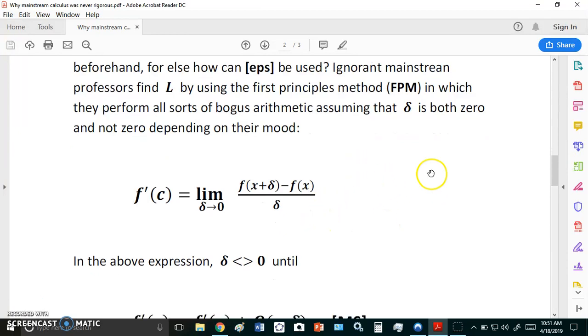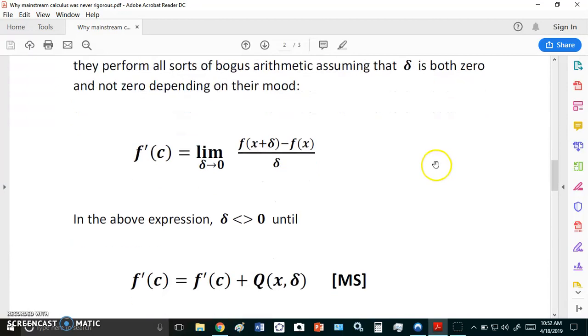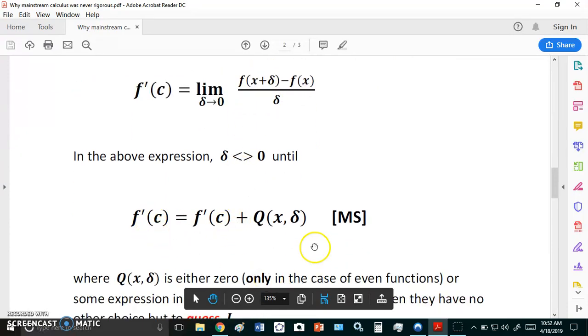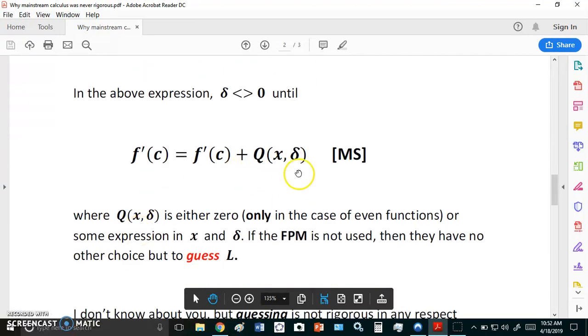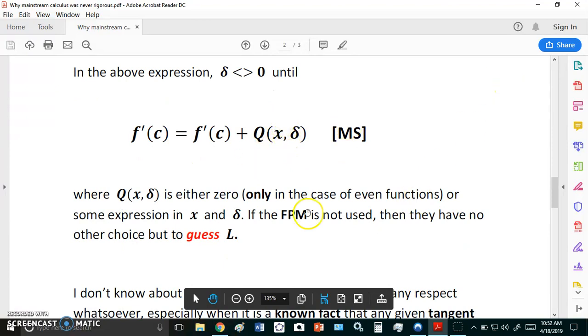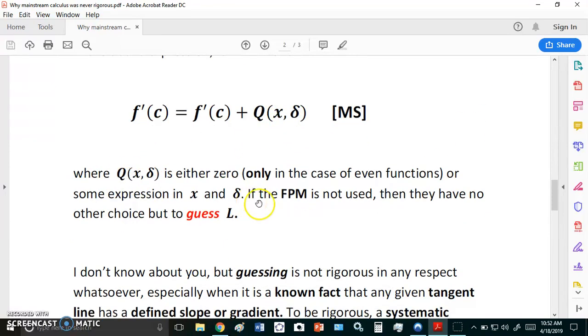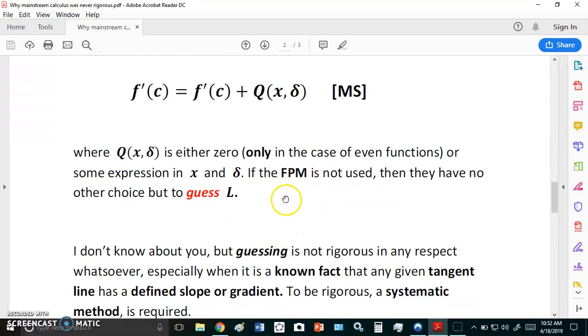In any event, the morons perform all sorts of bogus arithmetic assuming that delta is both zero and not zero depending on their mood. In the above expression delta is not equal to zero, and once we get to this expression here q of x delta, then suddenly it turns to zero unless you have an even function. So you're left with two choices. Either use the FPM which is circular and bogus nonsense and by some magic find L, or you have to guess L.